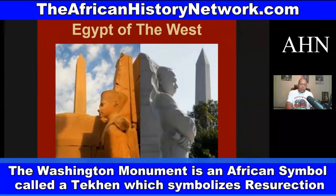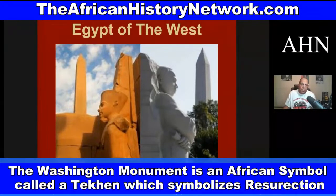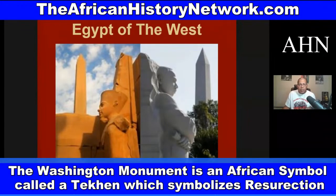The Washington Monument is called a Tekhen — the Greeks called it an obelisk, but it's actually a Tekhen, an ancient African symbol of resurrection coming from the story of Asar, Aset, and Heru — whom the Greeks called Osiris, Isis, and Horus. Freemasonry's foundation comes from the teachings of ancient Kemet, from the grand lodges in ancient Kemet and its temples. There were over 1,200 Tekhenu in ancient Kemet; today there are less than a dozen in Egypt.